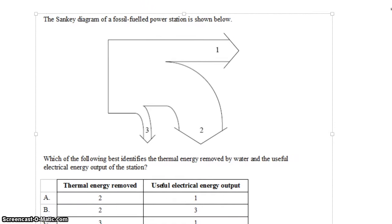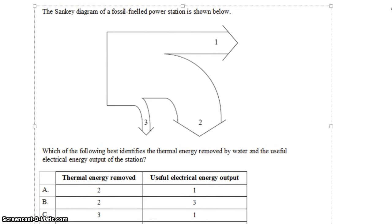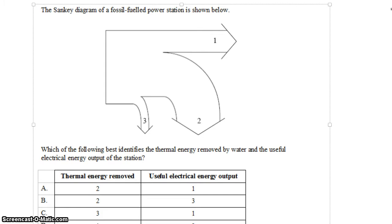We have a Sankey diagram for a fossil-fueled power station, and there are three branches to the diagram. So the total energy is being split into energies 1, 2, and 3.